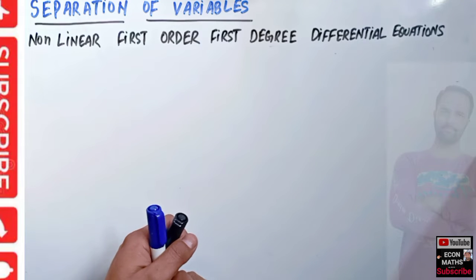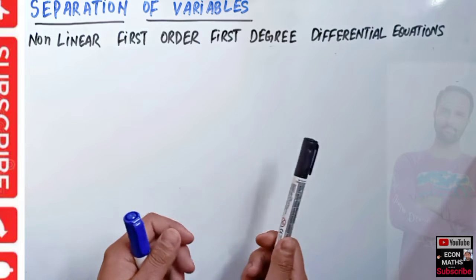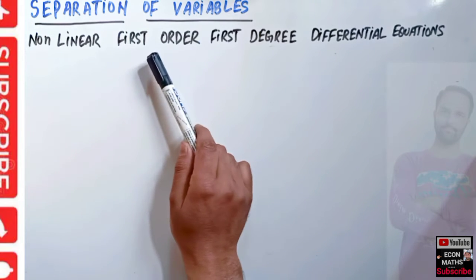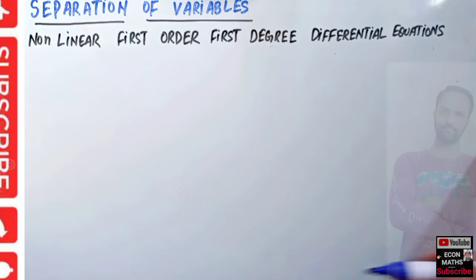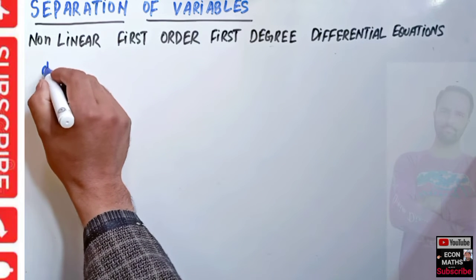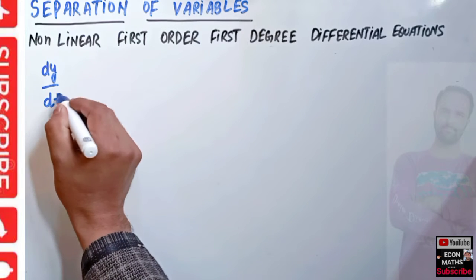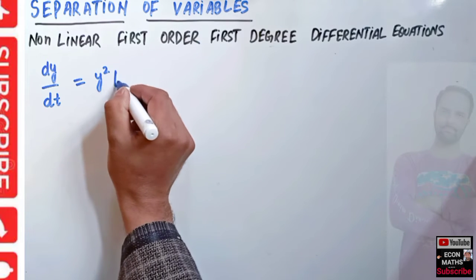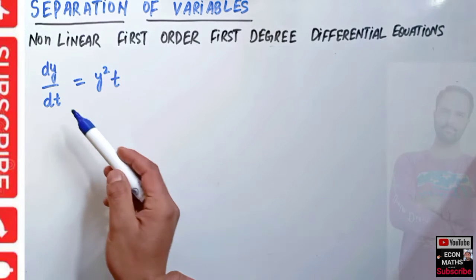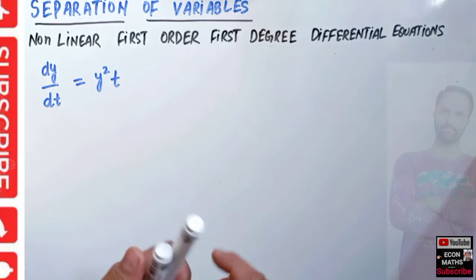In this video we will learn how to solve a differential equation using the separation of variables method. Let us say we have a nonlinear first-order first-degree differential equation. Let me write it in this form: dy/dt is equal to y squared times t. This differential equation is nonlinear, first-order, first-degree.